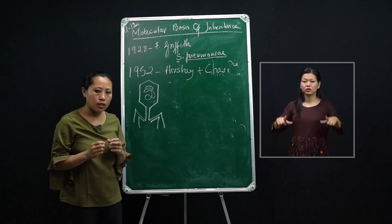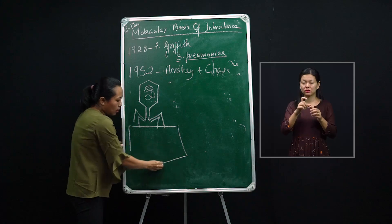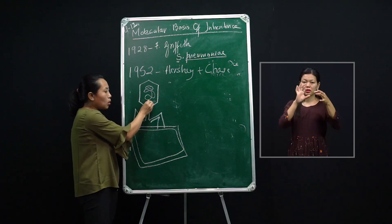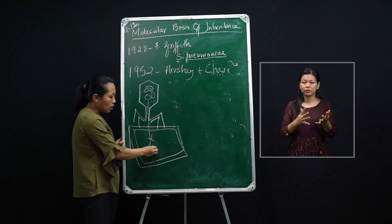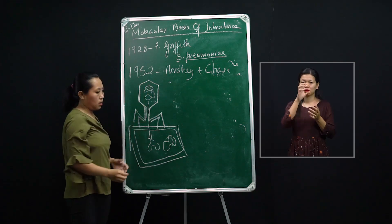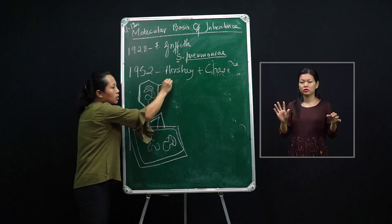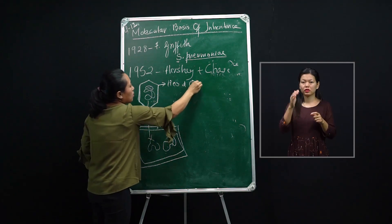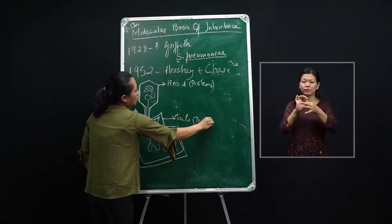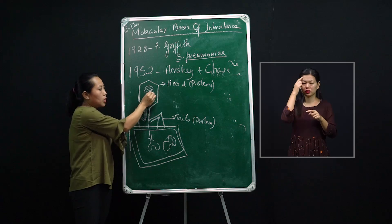A bacteriophage infects or attacks bacteria. During the course of infection, the bacteriophage gets attached to the bacterial cell and it is only the genetic material which moves into the bacterial cell, while the protein coat remains outside. A bacteriophage — a virus that infects bacteria — consists of a head made up of proteins and tails by means of which it attaches to the bacteria, also made up of proteins. Within the protein head is the genetic material.